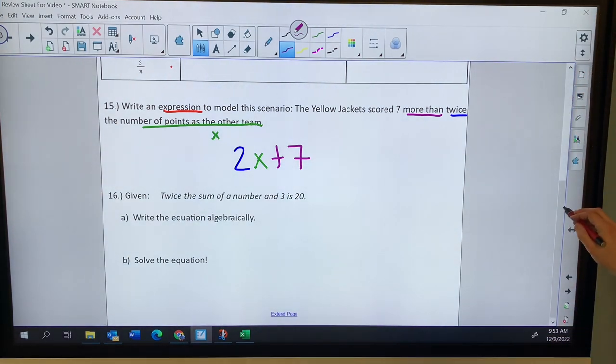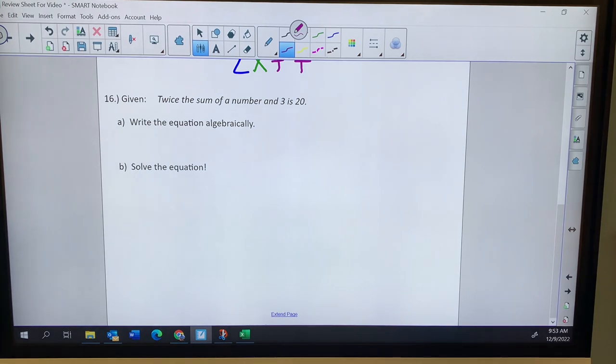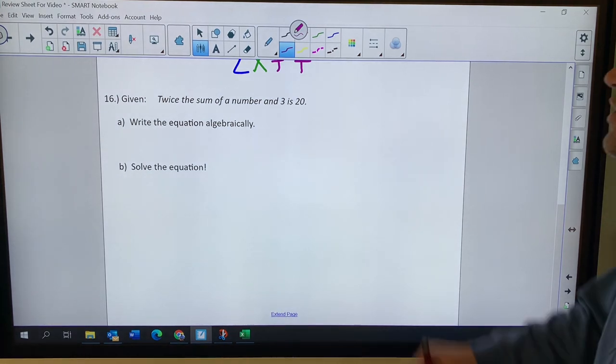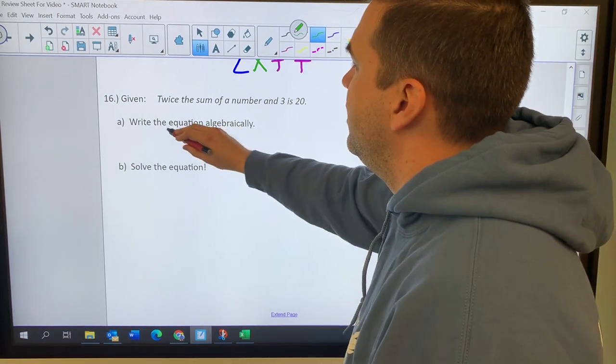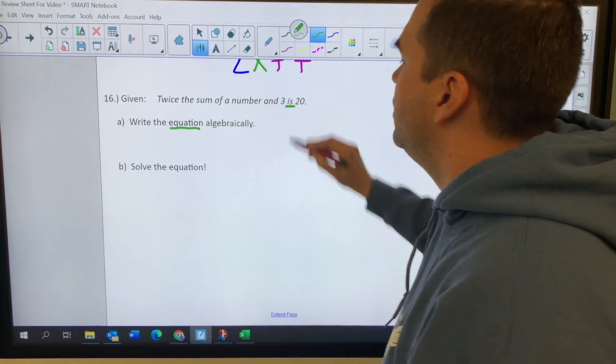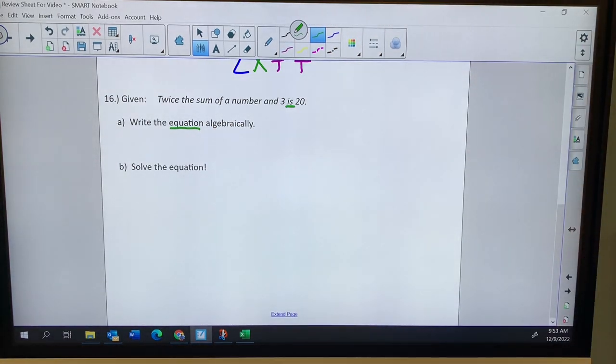Finally, number 16. Given twice the sum of a number and three is 20. Write the equation algebraically. Again, they're giving us a hint here. Equation. And that equation is represented by the is, the equal sign. Write the equation algebraically.